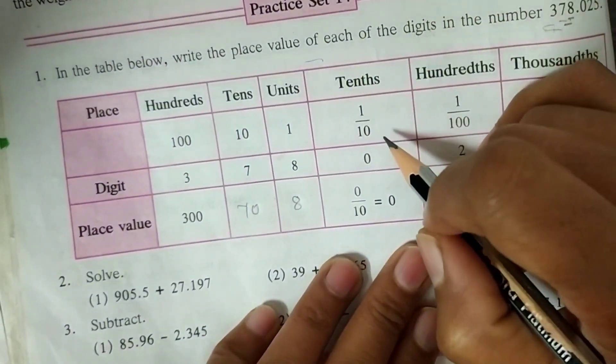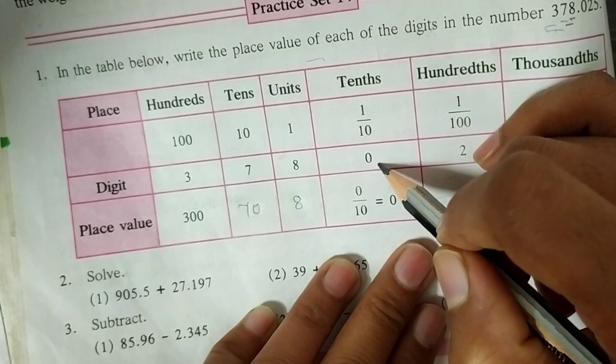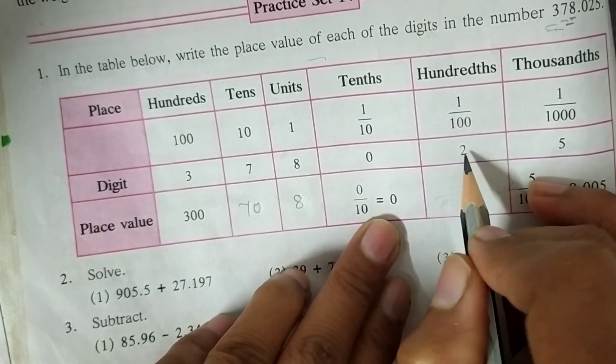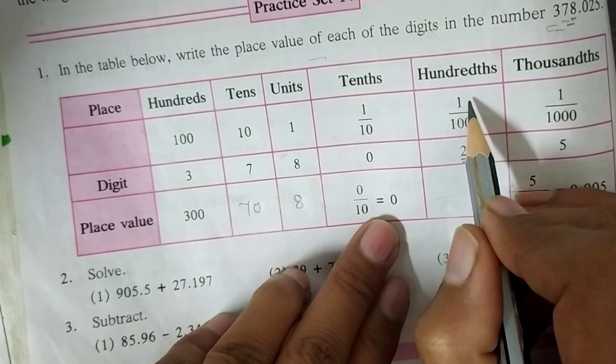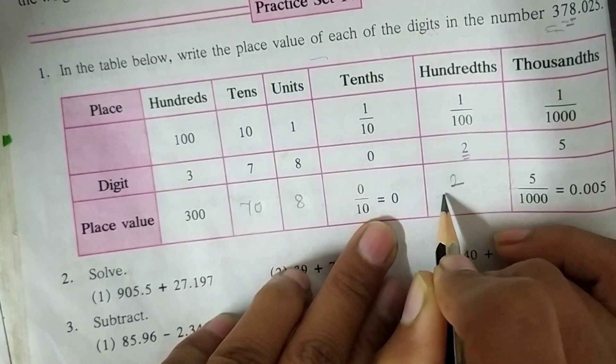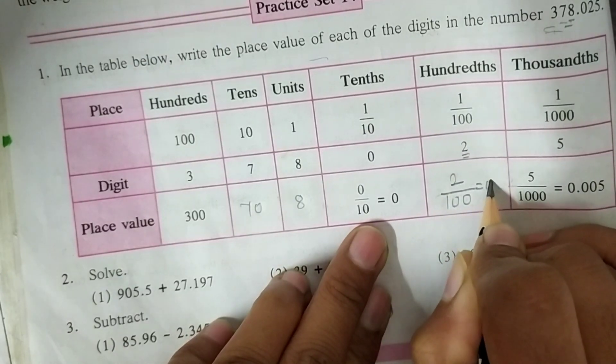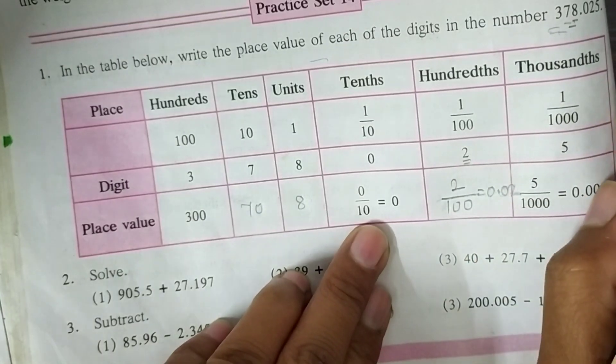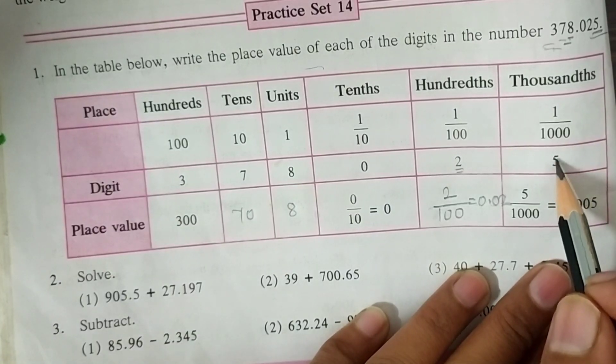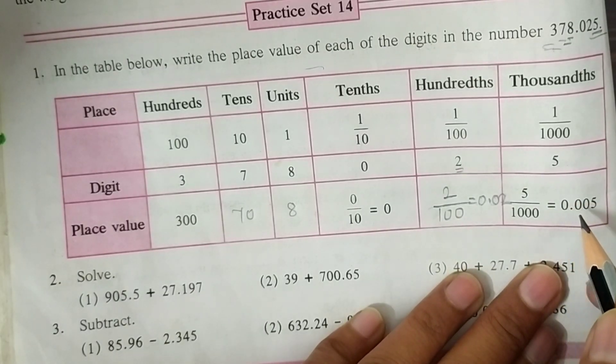On the tenths place, the value is 1 upon 10 and on that place, 0 is the digit and its value is 0. On hundredths place, there is a 2 digit and we multiply it by 1 upon 100. The place value of 2 is 2 upon 100, that is 0.02. On the thousandths place, there is a 5 and by multiplying 1 upon 1000, its place value is 0.005.